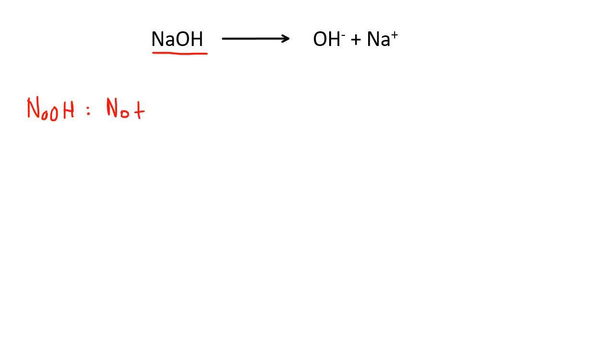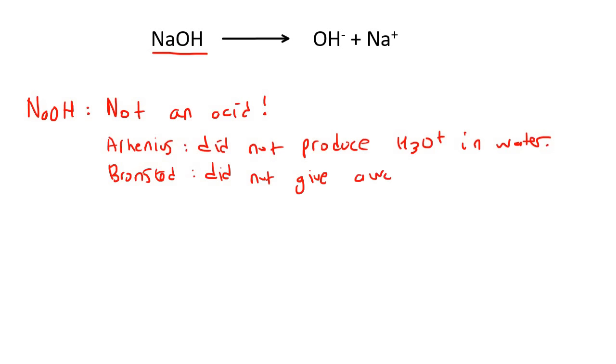So we're going to look at NaOH. It is not an acid. Full stop. If you want to say why, we could say because of the Arrhenius theory, it did not produce H3O+ in water, and also Bronsted, as it did not give away a proton. So it is not an acid at all.